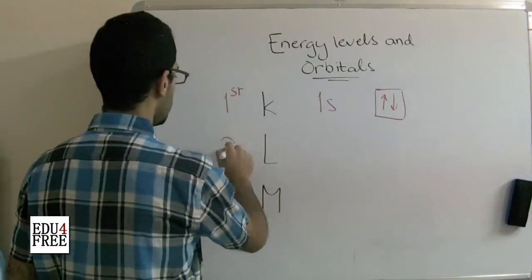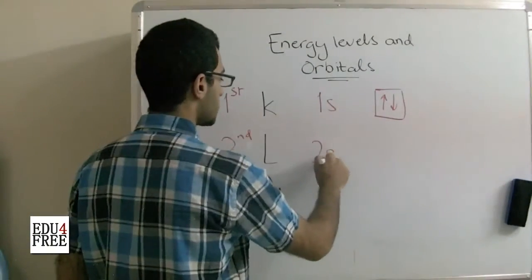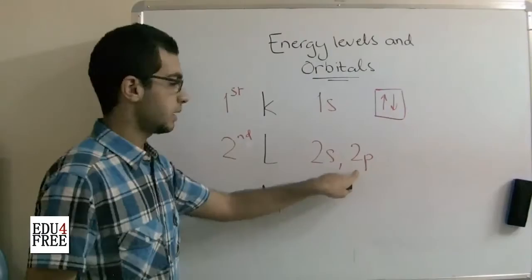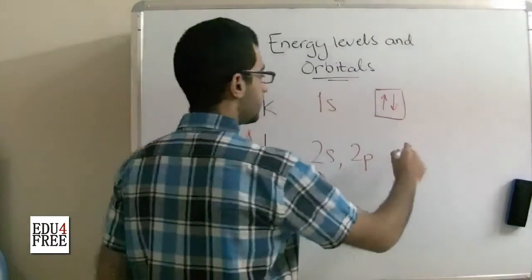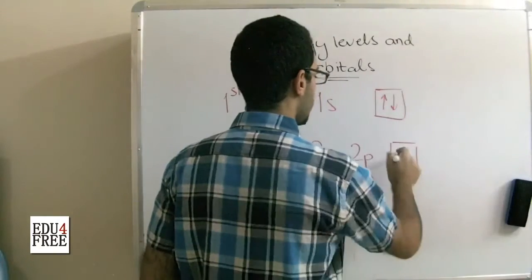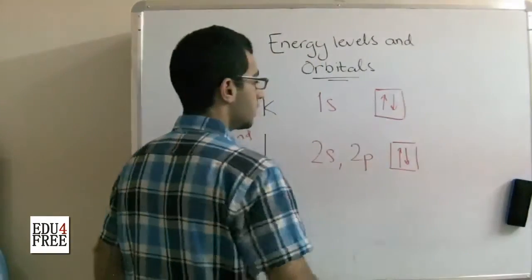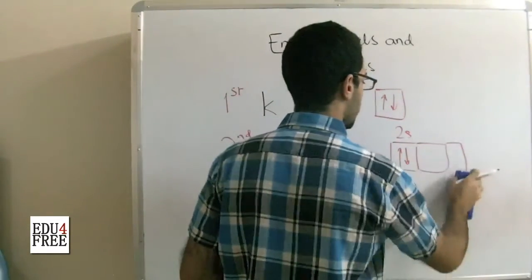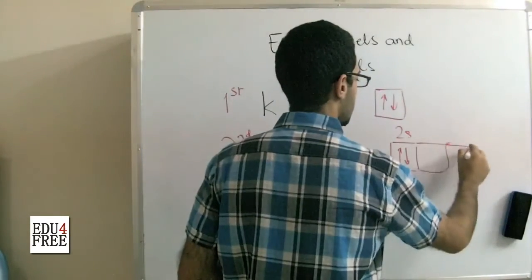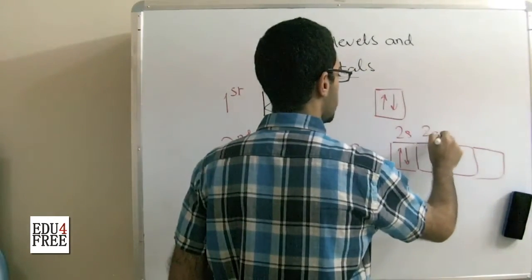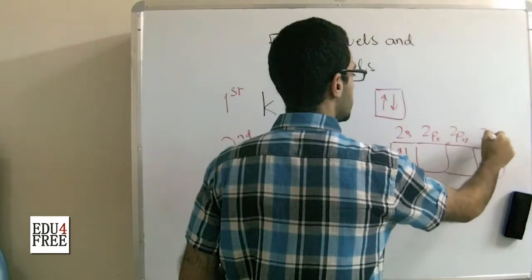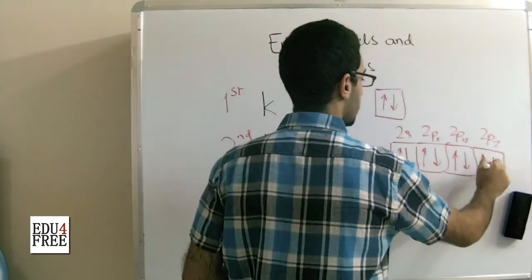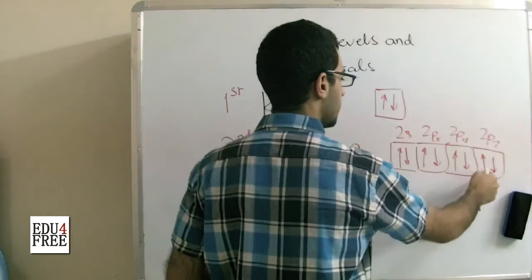The L is the second and it contains the 2s and the 2p and the 2p consists of 3 orbitals X, Y and Z. So we have, first we have the S orbitals here. Then we have 3 other orbitals, which is 2p X, 2p Y and 2p Z. So we have 1, 2, 3, 4, 5, 6, 7, 8 electrons.